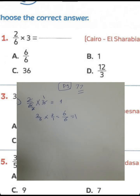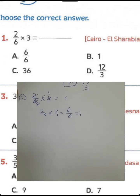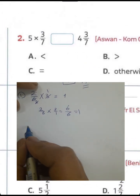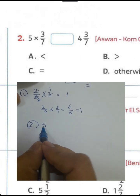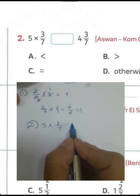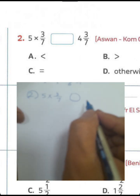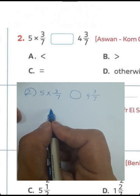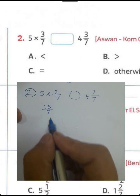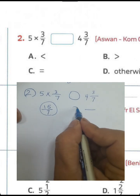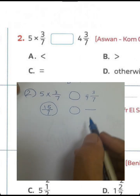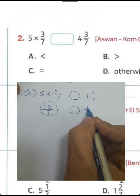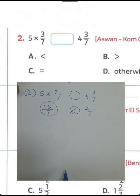Question number 2: comparing between two fractions. We have 5 times 3 over 7, and 4 and 3 over 7. We know 5 times 3 equals 15, so the result here will be 15 over 7. We can convert the mixed number: 4 times 7 equals 28, and 28 plus 3 will be 31, so this number will be 31 over 7.